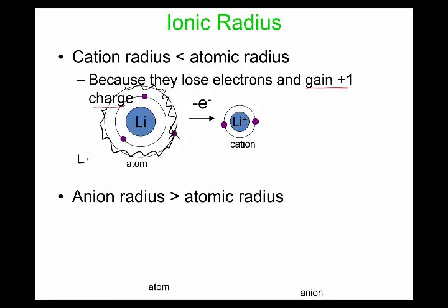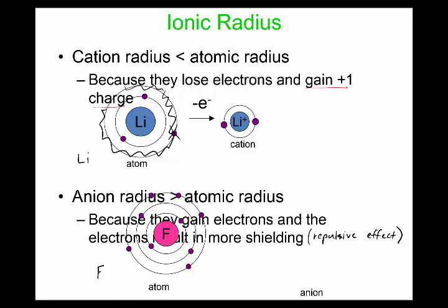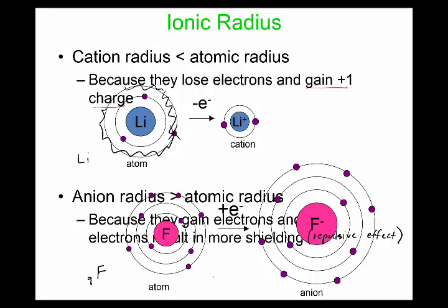With an anion radius, this ends up being a lot bigger than the atomic radius. The reason is because you gain electrons, and the electrons result in more shielding or repulsive effect. Here we have a picture of fluorine — regular fluorine with nine electrons and nine protons. If you add an electron, it now has ten electrons. We see the electron cloud gets puffier, adding more repulsion. These dotted lines represent repulsive effects, and the electron cloud got puffier.